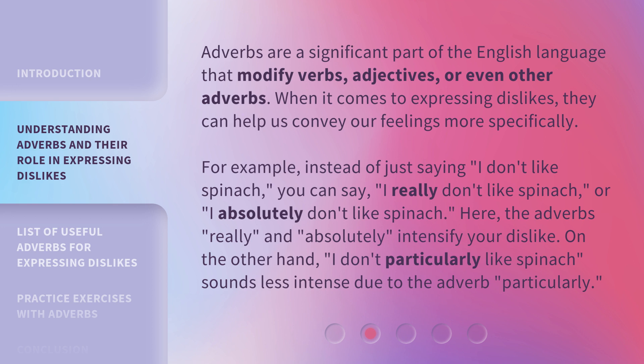For example, instead of just saying 'I don't like spinach,' you can say 'I really don't like spinach,' or 'I absolutely don't like spinach.' Here, the adverbs 'really' and 'absolutely' intensify your dislike. On the other hand, 'I don't particularly like spinach' sounds less intense due to the adverb 'particularly.'